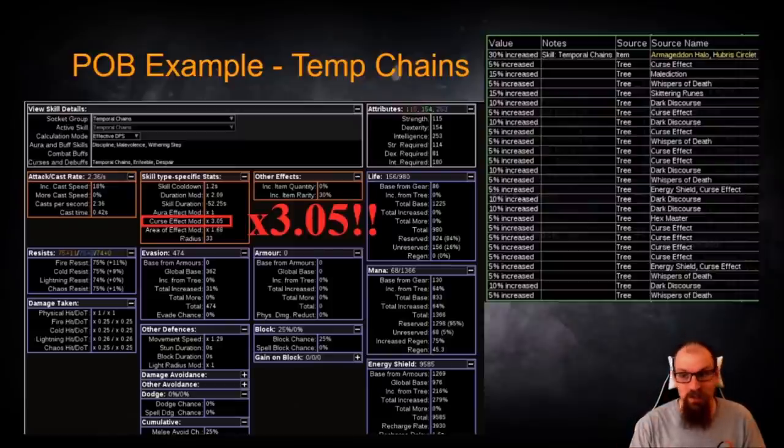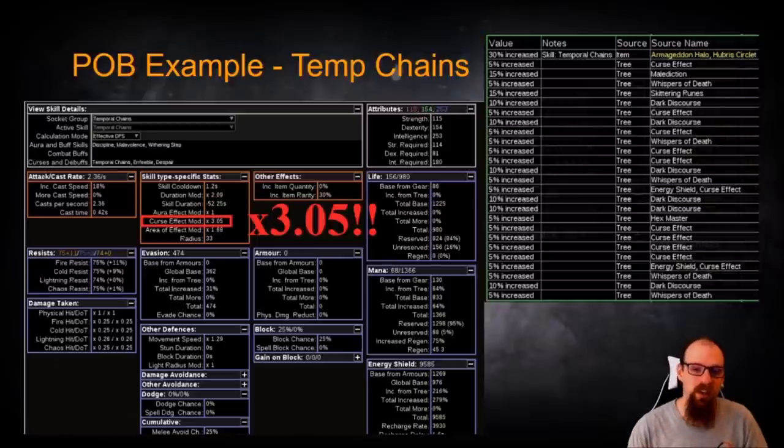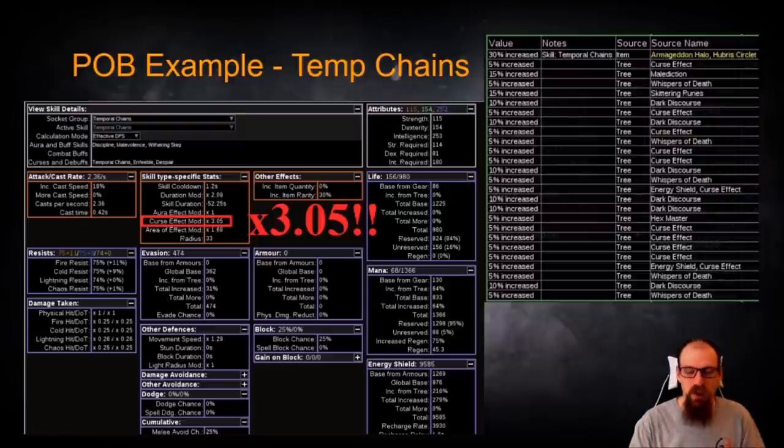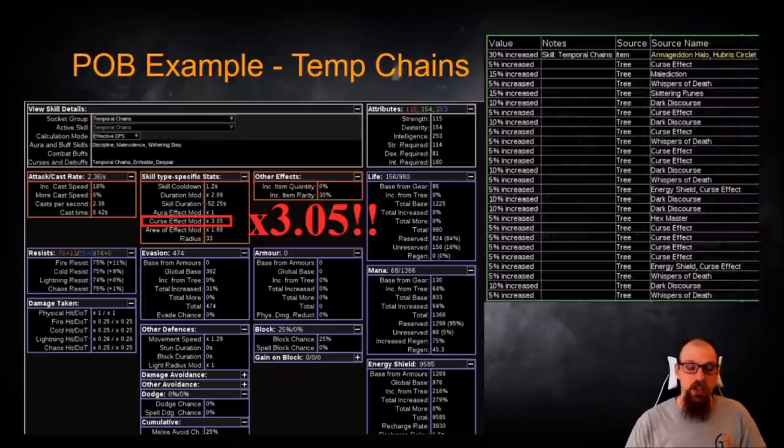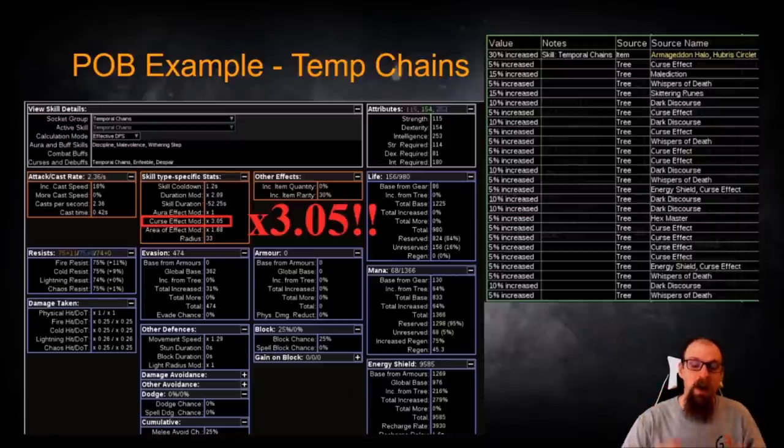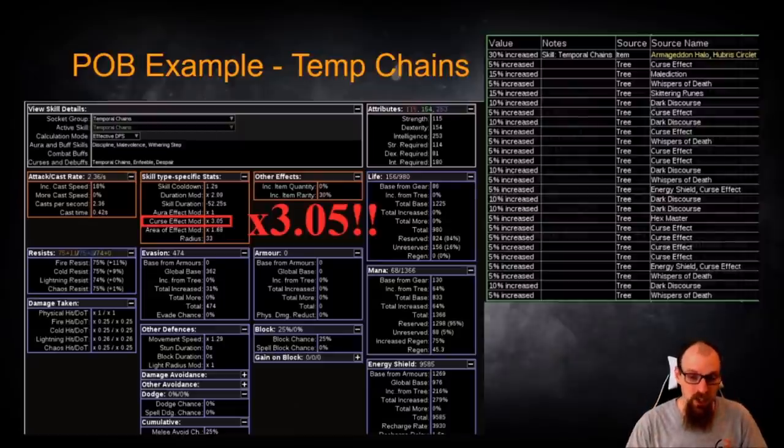This is simply ridiculous. Now, it does require a bit of investment. You can see that we do have the Temporal Chains increased effect Lab Enchant on our helmet. You can see that we're using Voices. You can see that we're stacking as much Curse Effect as we can on the tree. But this is where it all pays off. Since Curse Effect mod in POB starts off as times one,